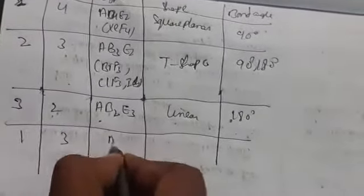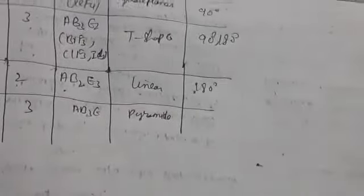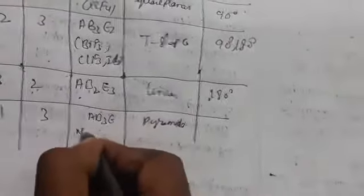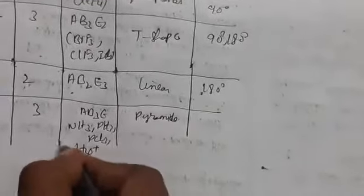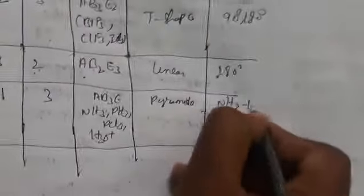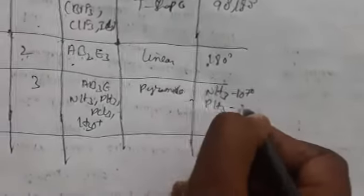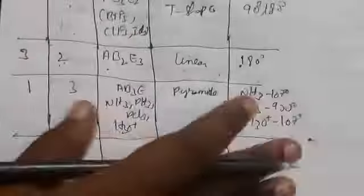With one lone pair and three bond pairs, the molecule type is AB3E and the shape is pyramidal. Examples include NH3 (bond angle 107°), PH3 (bond angle 93.3°), PCl3, and H3O+. Different molecules give different bond angles — for H3O+ the bond angle is also 107°.